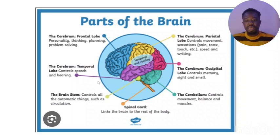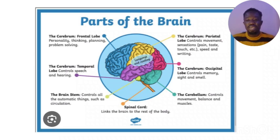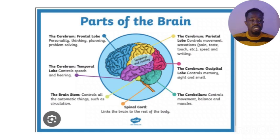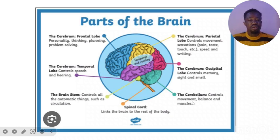The frontal lobe is responsible for thinking, feeling, planning, and personality. The temporal lobe controls speech and other functions. The cerebellum controls movement, body movement, and coordination. If a patient presents to a facility with any of these clinical manifestations, you will have an insight into which part of the brain has been affected.